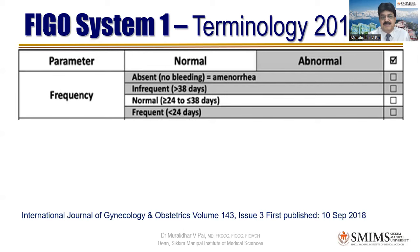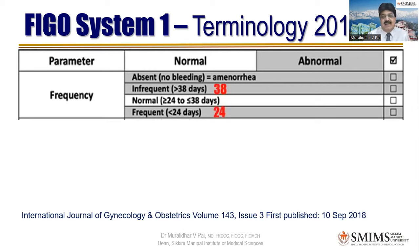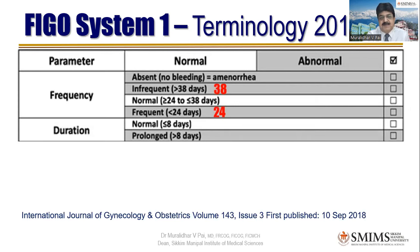Abnormal frequency is classified as: absent — no bleeding, also called amenorrhea; infrequent — cycles more than 38 days apart; or frequent — cycles less than 24 days apart, which was called polymenorrhea in the past with a cutoff of 21 days. Now the cutoff is 24 days. I used to use the table of sevens; now I use the number eight — 8×3 is 24 and 8×4 is 32 approximately. The key numbers to highlight are 38 and 24. The next parameter is duration.